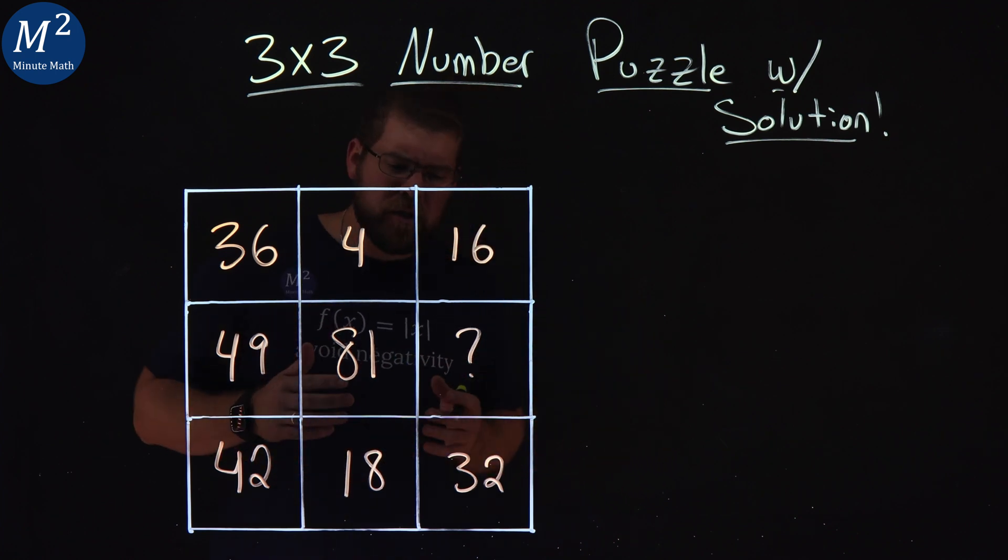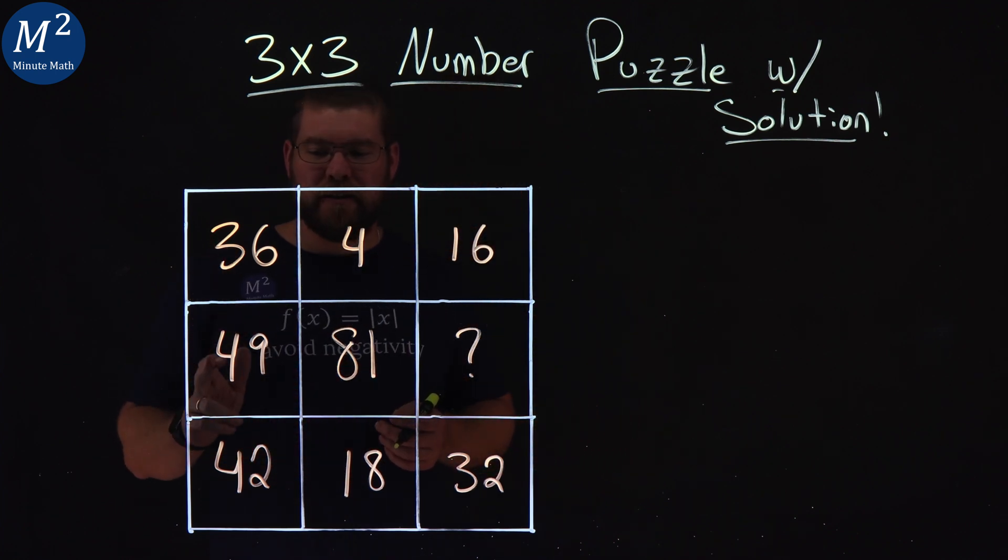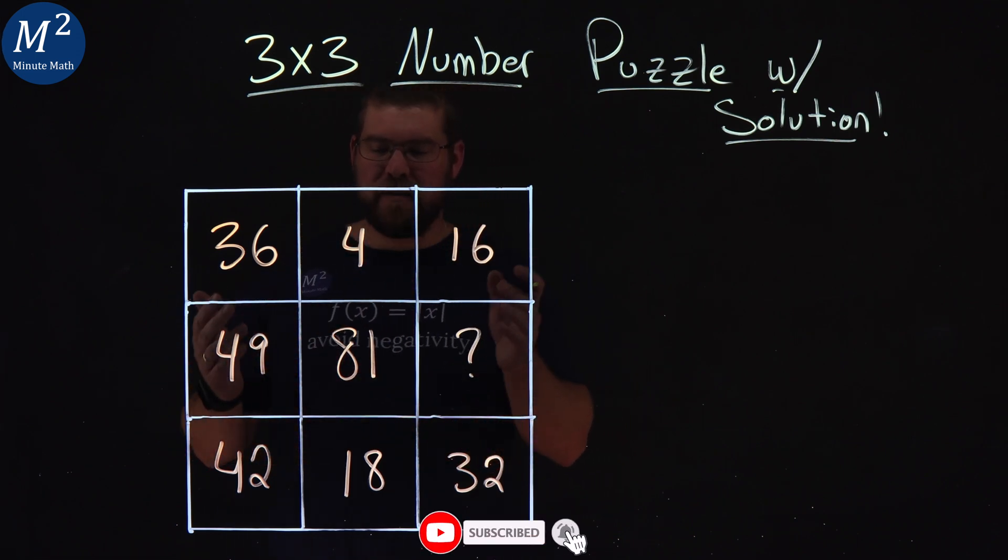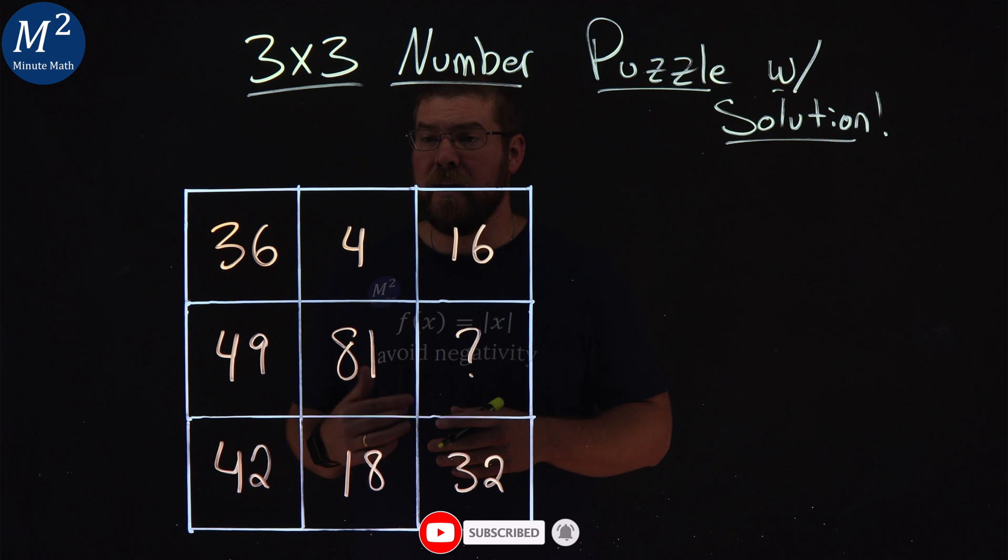Alright, so when I'm looking at a problem like this, I see 36, I see a 49, I see 4, 81, and 16 up at the top, and all those numbers are a number squared.